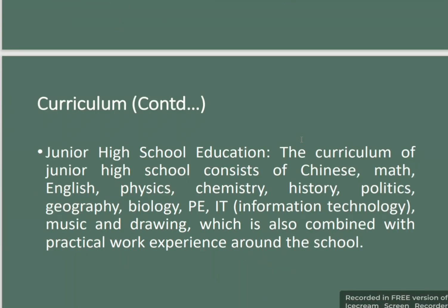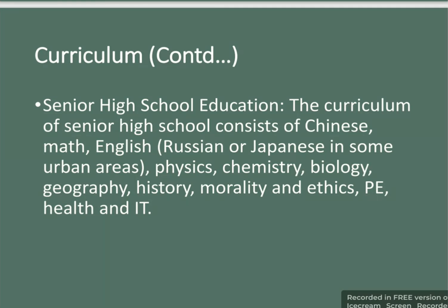The curriculum of junior high school consists of Chinese, mathematics, English, physics, chemistry, history, politics, geography, biology, physical education, information technology, music, and drawing. In some urban areas, Russian and Japanese are also offered alongside English. Additional subjects include morality and ethics, health, and IT.